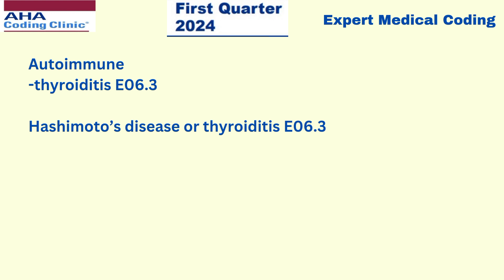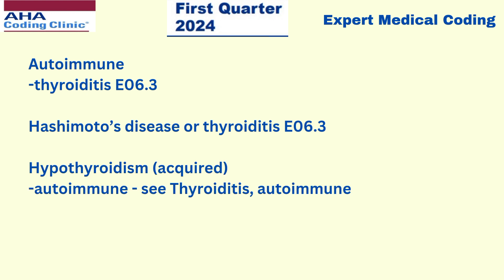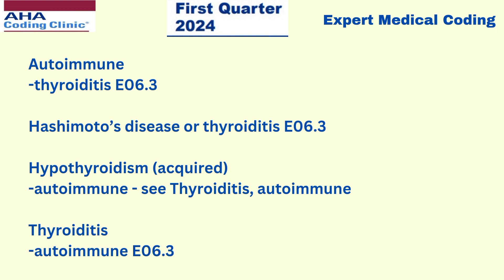If you go to the index and search with the main term hypothyroidism acquired and under that sub-term autoimmune, it will lead you to a 'see' instruction: see thyroiditis autoimmune. So if you go to thyroiditis and autoimmune as a sub-term, it will again lead you to code E06.3.